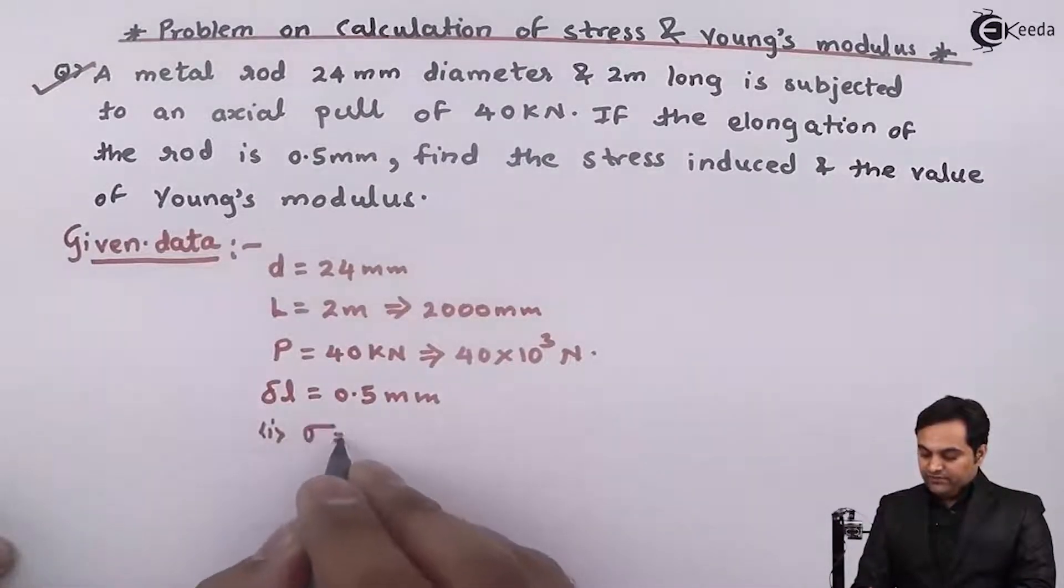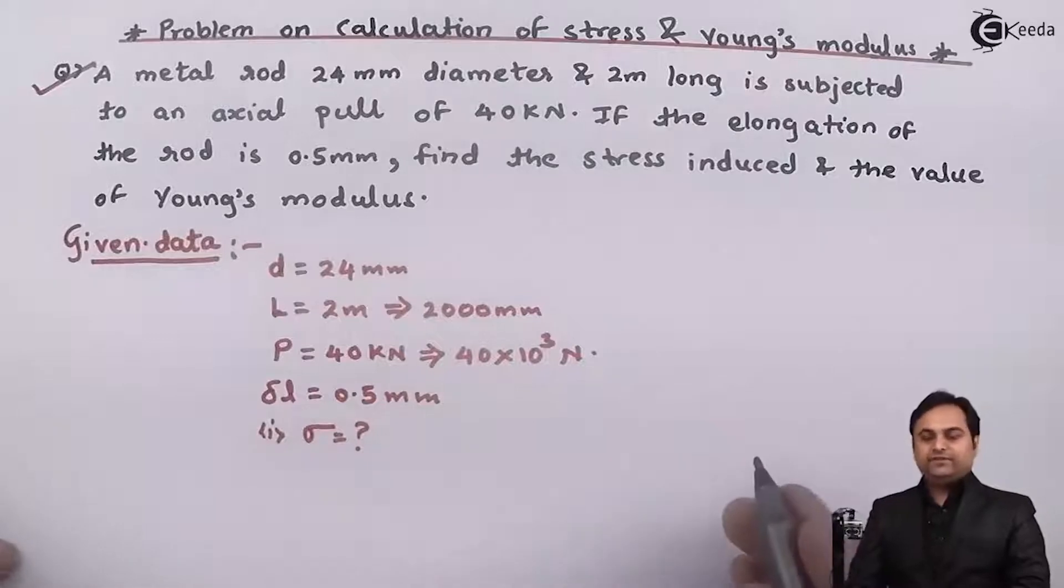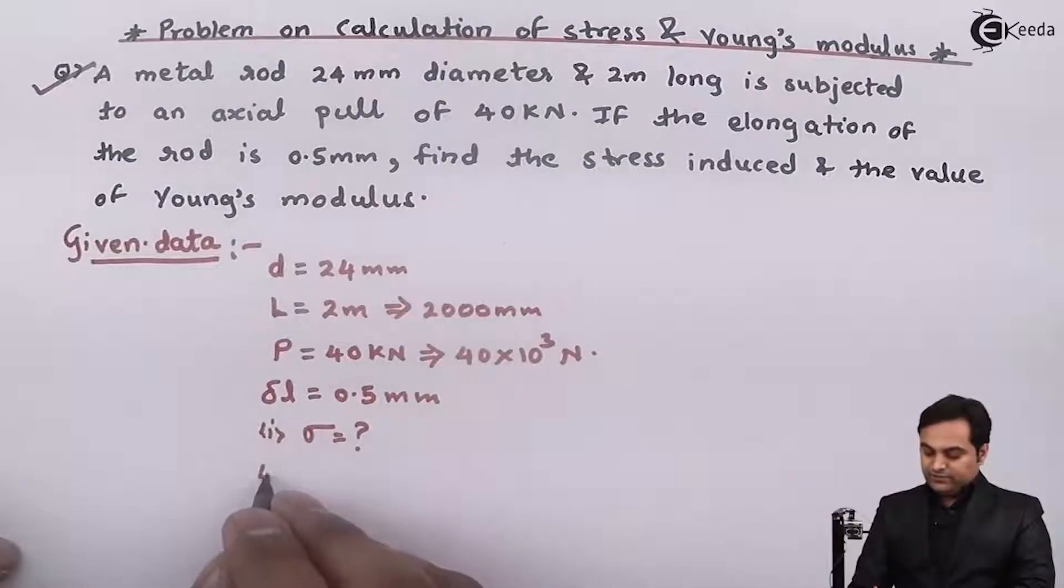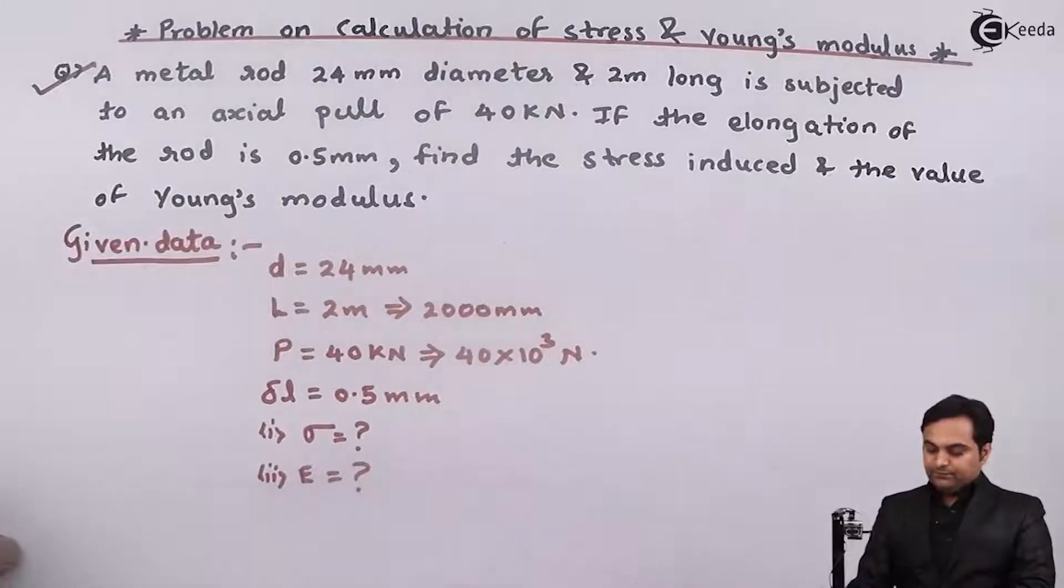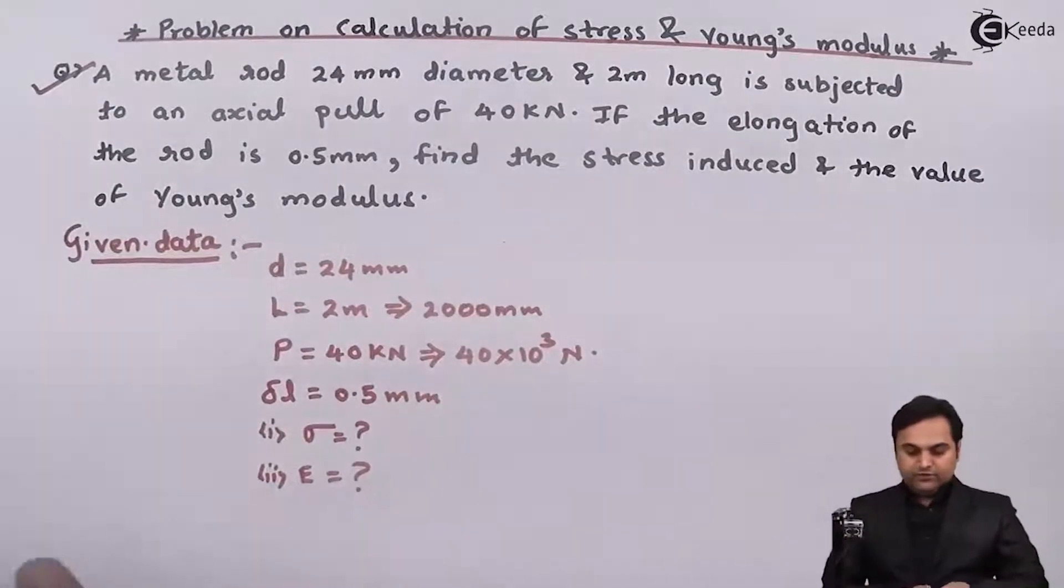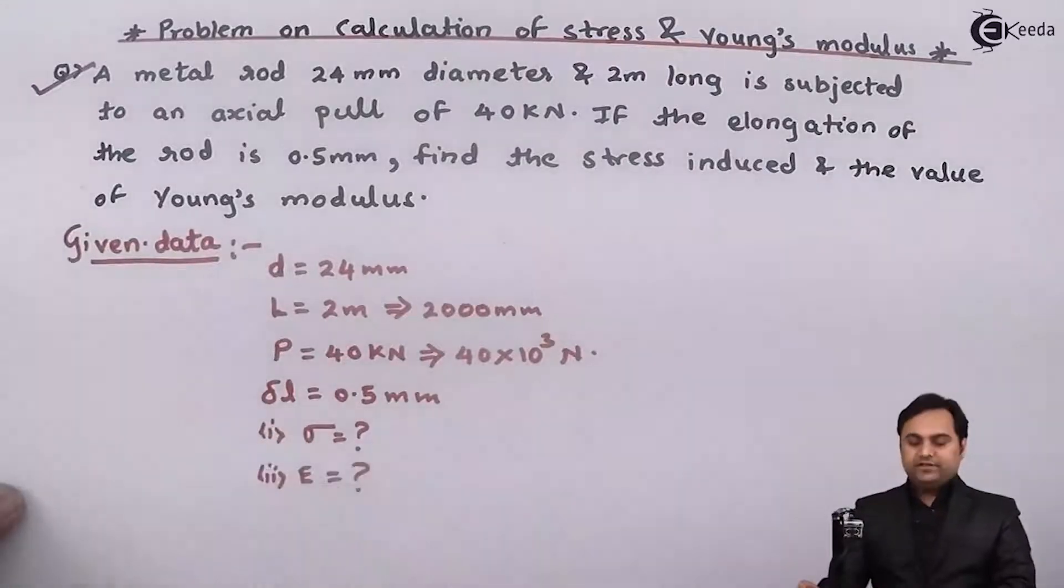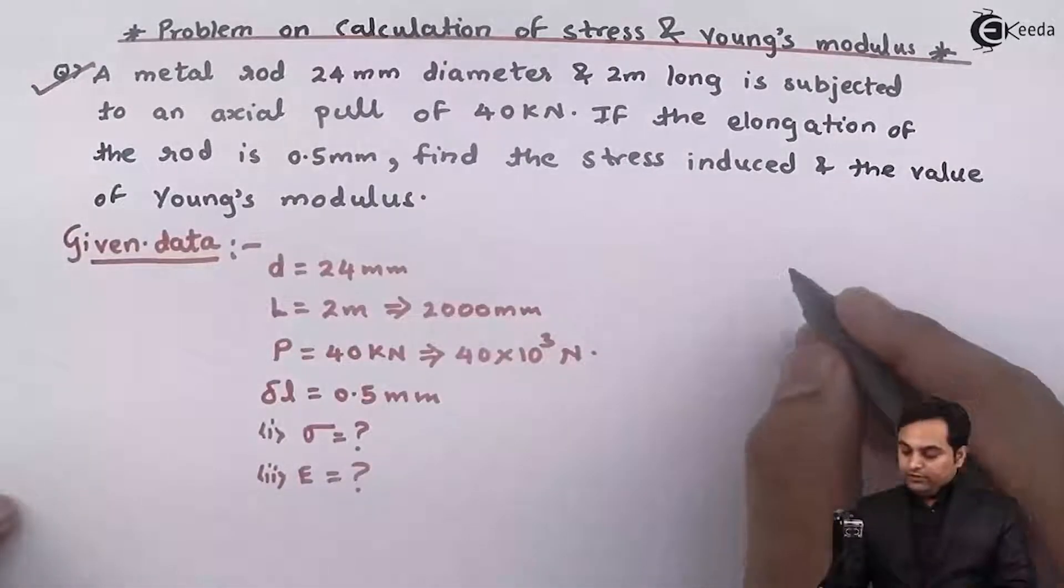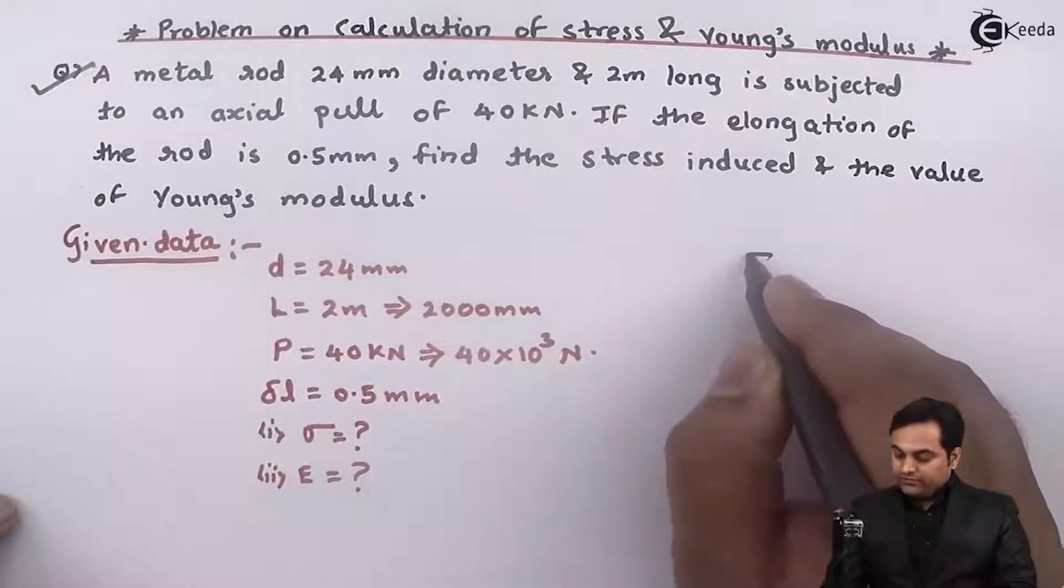we have to calculate how much is the value of sigma, that is stress induced, and Young's modulus that is denoted by capital E. Now for this question I draw a diagram since it is given that there is a metal rod. So it will be circular in cross section.